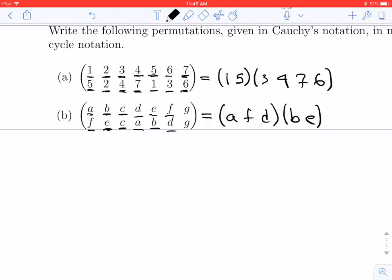Now let's see, C goes to C, so we don't have to write that. And G goes to G. We don't have to write that either. So in fact, A, F, D, B, E is the entire cycle.